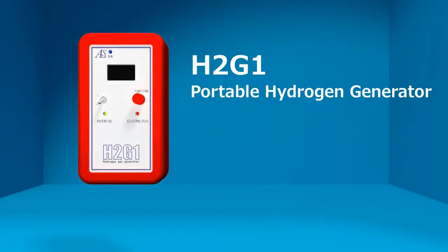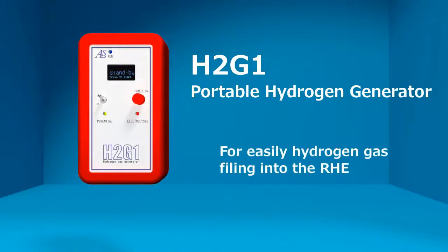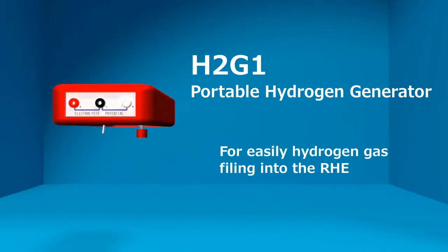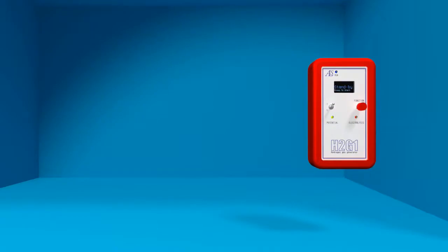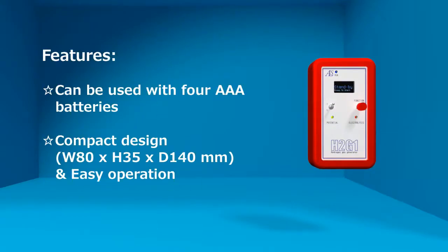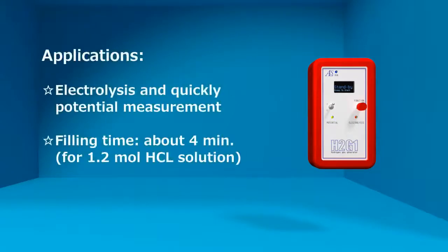Using H2G1 Portable Hydrogen Generator, even without a potentiostat, makes it easy to charge the hydrogen gas into the reversible hydrogen electrode kit and use it as a reversible hydrogen electrode with good potential stability. The practical and safe reversible hydrogen electrode can be prepared by using this instrument for hydrogen gas generation.